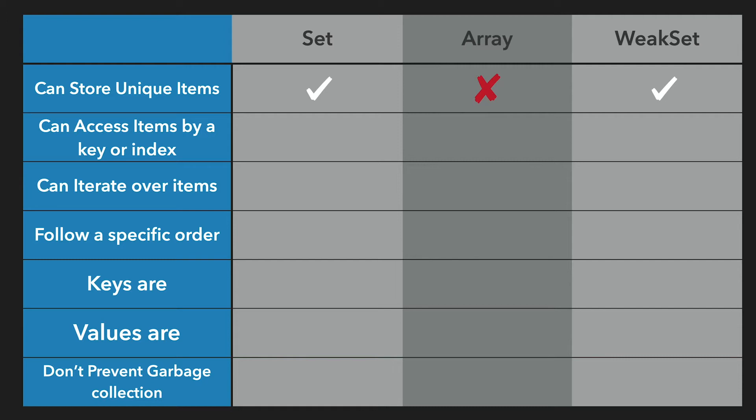Set and WeakSet do not have keys, or better said, keys and values are the same. So every operation you do with them involves passing the value. That means you can't access the items just by knowing where it is in the list, like you can do with array indexes.